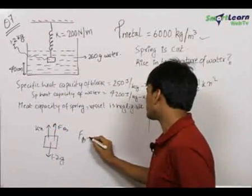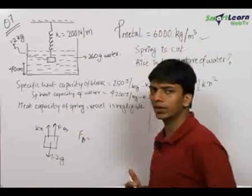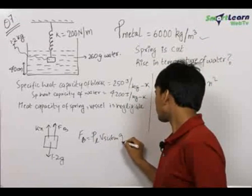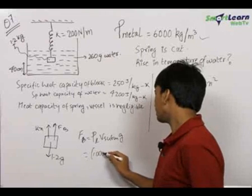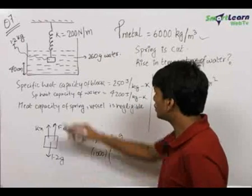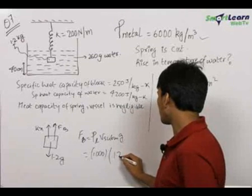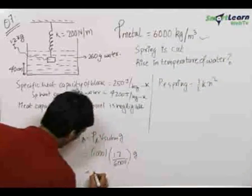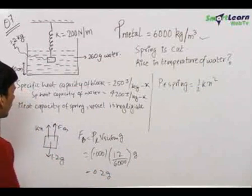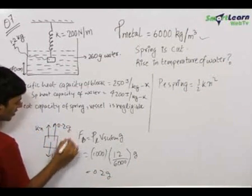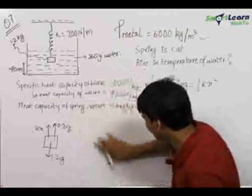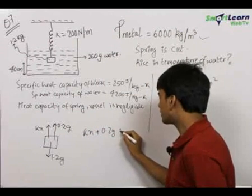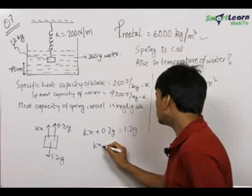The buoyant force is always equal to density of the liquid times volume submerged times g, that is ρ_liquid × V_submerged × g. This can be written as 1000 (density of water) times volume submerged. The volume submerged equals mass divided by density, giving 1.2/6000 times g. This comes out to be 0.2g. Therefore: kx + 0.2g = 1.2g, so kx = g.